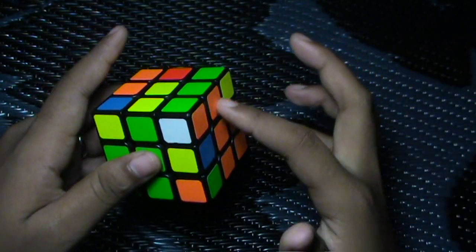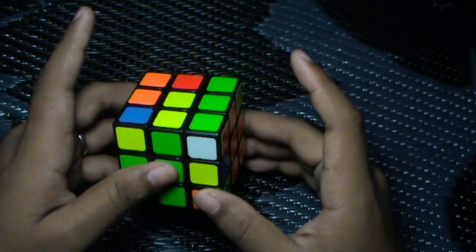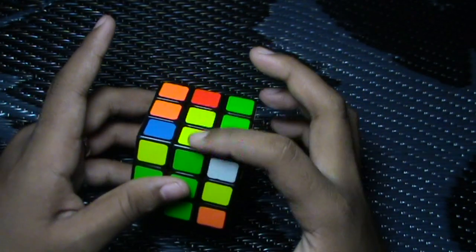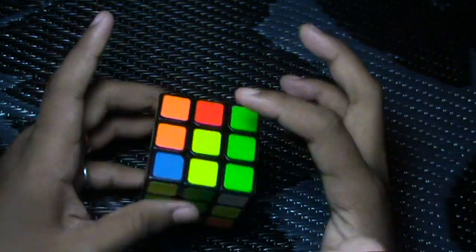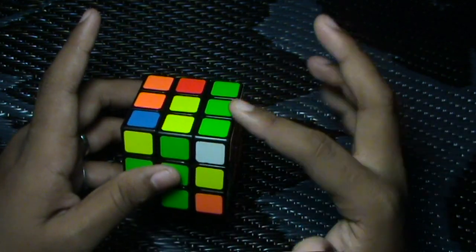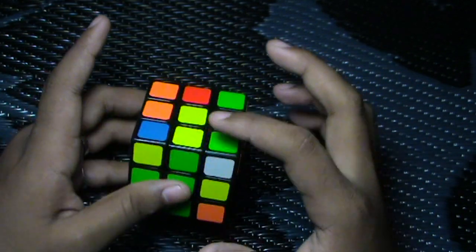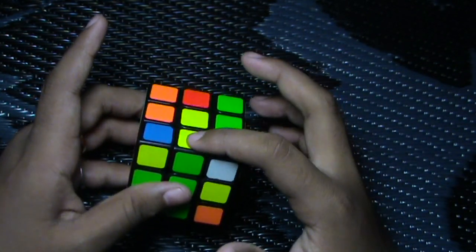So next case is you have this F2L pair and you have one of the edges on the U layer. This edge can be in either of the three places but I will show all of the cases starting with when the edge is just right here.